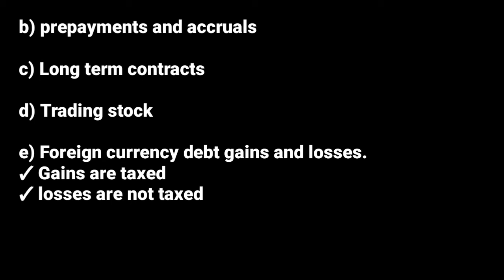Another principle is long-term contracts. Long-term contracts refer to a contract that takes a long period of time to be completed. It can be a contract for manufacturing, installation, or construction. For long-term contracts, they look at things like the revenue of the contract, the costs incurred, and the profits derived from the contract, and use these for tax purposes.